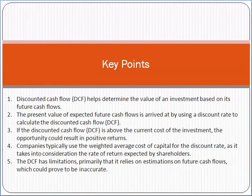Discounted cash flow determines the value of an investment based on its future cash flows. The present value of expected future cash flows is arrived at by using a discount rate to calculate the discounted cash flow. If the discounted cash flow is above the current cost of the investment, the opportunity could result in positive returns. Companies typically use the weighted average cost of capital (WACC) for the discount rate, as it takes into consideration the rate of return expected by shareholders.